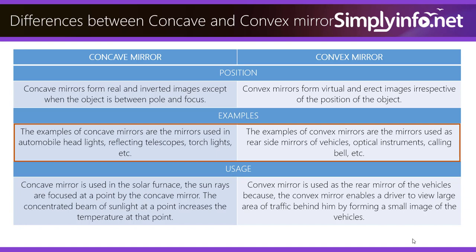Concave mirror is used in the solar furnace. The sun rays are focused at a point by a concave mirror. The concentrated beam of sunlight at a point increases the temperature at that point.